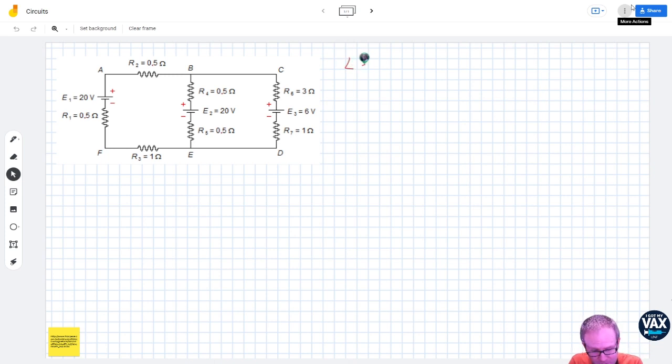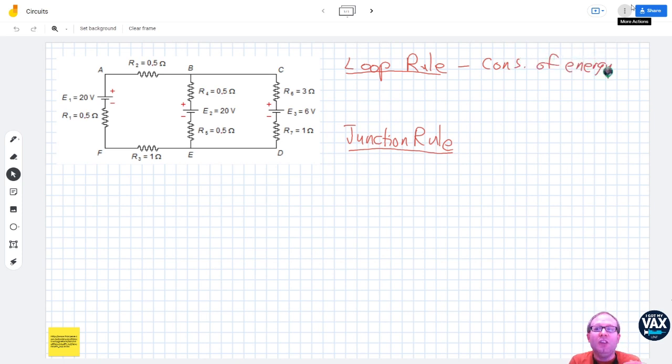Kirchhoff's laws come in two varieties. There's the loop rule and the junction rule. These are basically circuit-based implementations of two conservation laws. The first rule, the loop rule, is basically conservation of energy because it says that by the time you go around a loop, you need to have reset the voltages that are going on in this circuit.